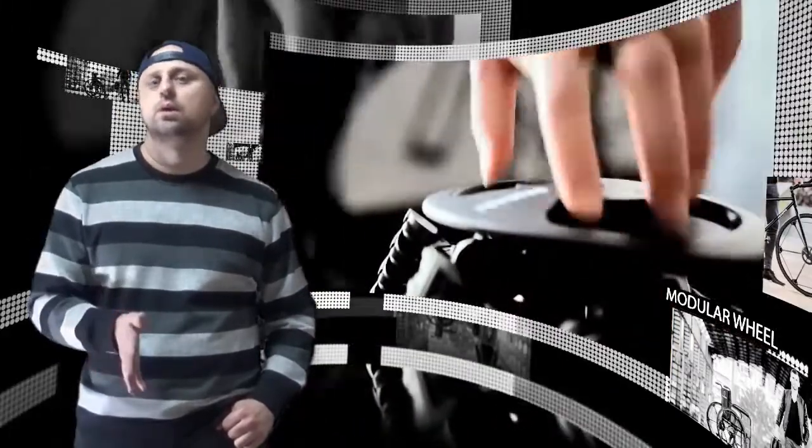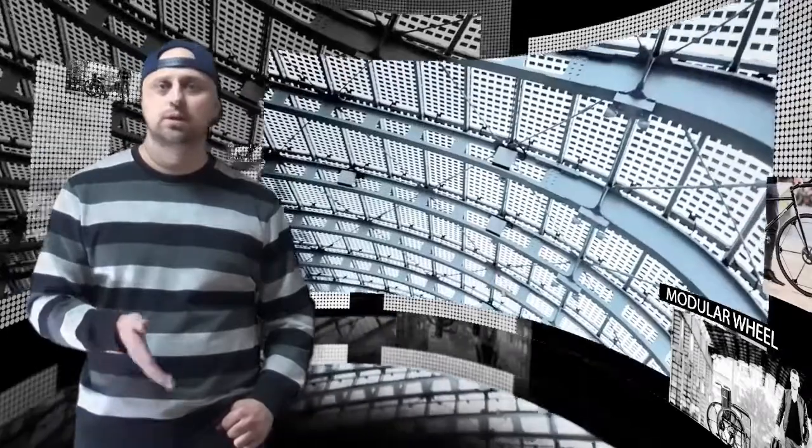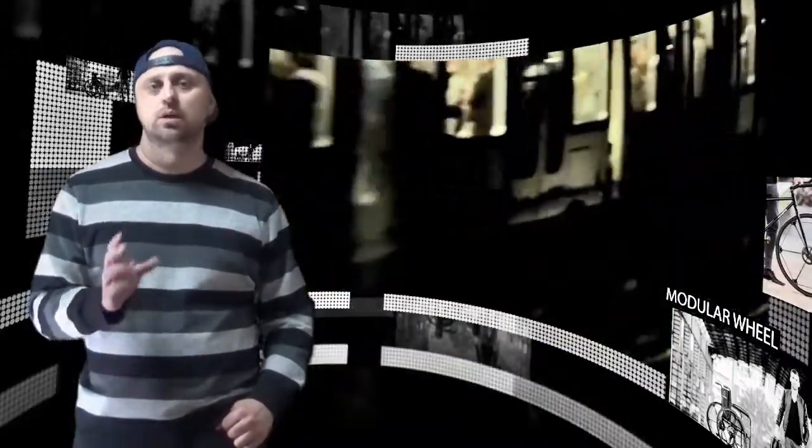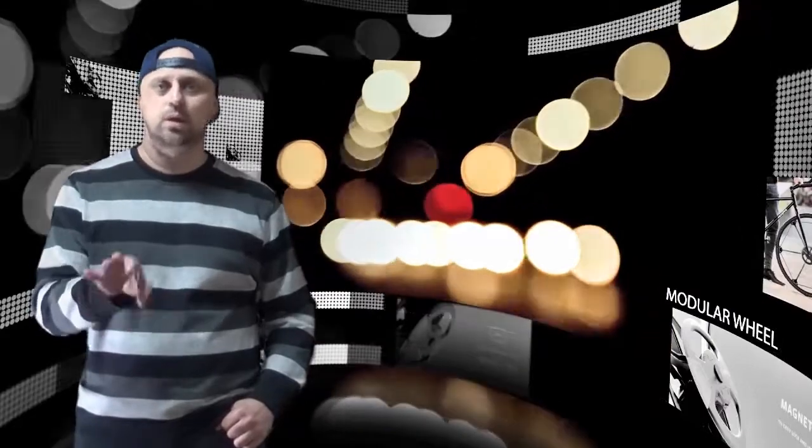After years of research and hundreds of 3D models, the inventor has revealed the incredible Revolve wheel that collapses like an umbrella, allowing riders to have the benefits of a full-sized wheel while saving about 60% space when needed.